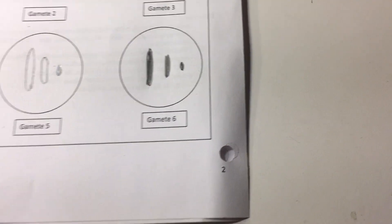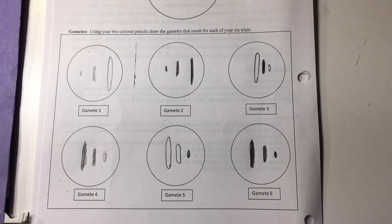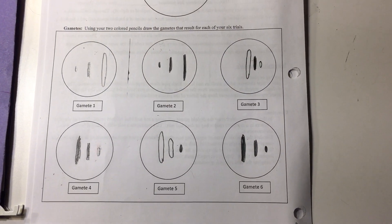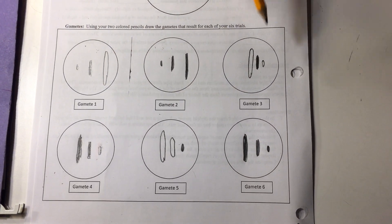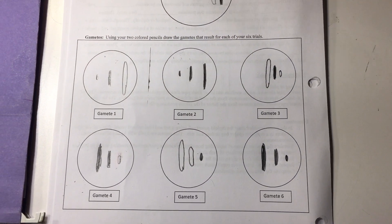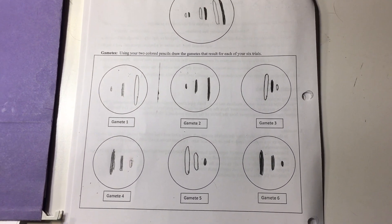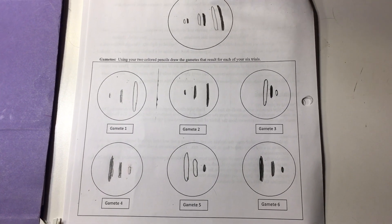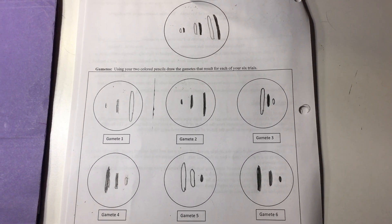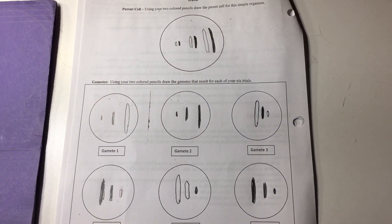Looking at the results, gametes in trial two and trial six are the same, but all the rest are different. This shows that starting off with the same parent cell, when you do random assortment you can get different combinations of chromosomes in the gametes — and that's what random assortment is all about.